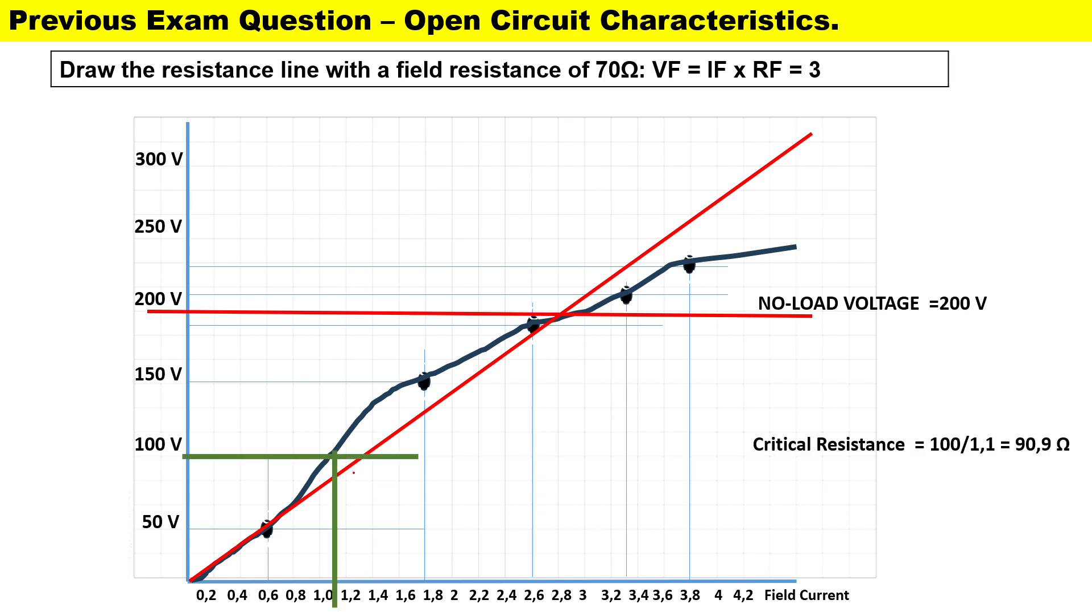To calculate the critical resistance, I'm going to choose a nice whole value for our voltage. Let's say I choose 100 volts. I draw a line across where it intercepts with the OCC curve, draw a line down, and we get 100 volts divided by 1.1 amperes. Therefore the critical resistance in order for our machine to operate at separately excited conditions for our curve will be 90.9 ohms.